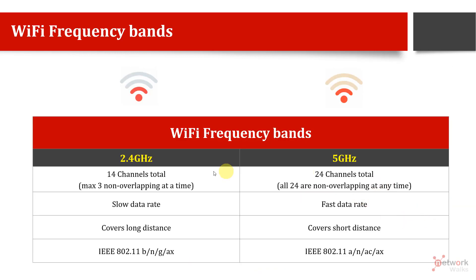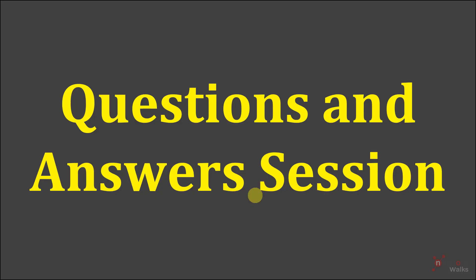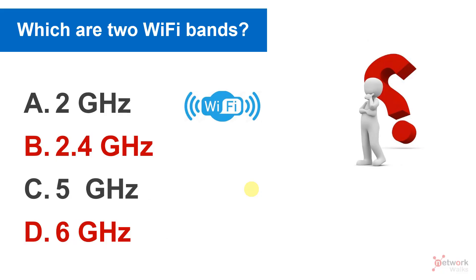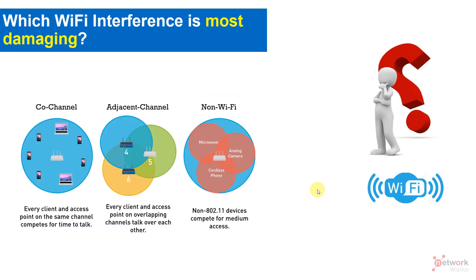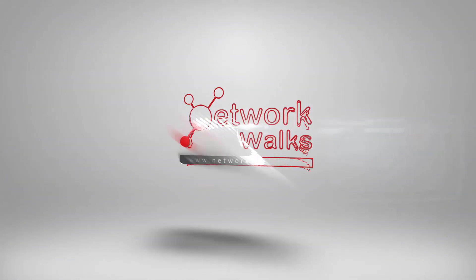That covers the overview of 2.4 GHz and 5 GHz frequency bands. In the next parts of this Wi-Fi series, we'll discuss these bands in more detail. Here's a question for you: please write your answer in the comments — what are the two valid Wi-Fi bands? Is it 2 GHz and 2.4 GHz, or is it 2.4 GHz and 5 GHz? Thank you for watching; any questions or feedback, please write in the comments section.